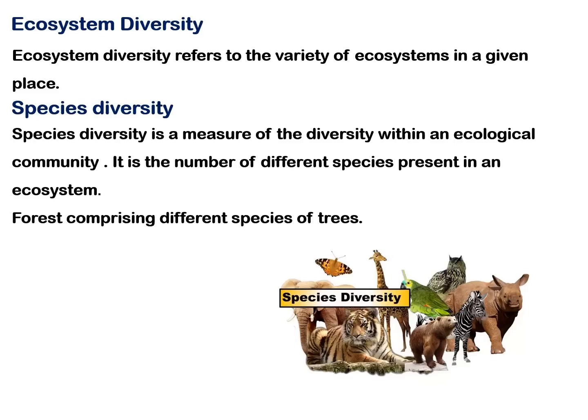Ecosystems can be land-based, called terrestrial ecosystems, or water-based, called aquatic ecosystems. Aquatic ecosystems include freshwater areas as well as oceans and seas. Forests are an example of terrestrial ecosystems.